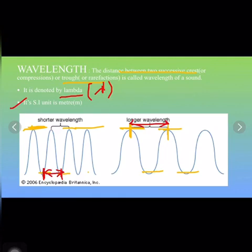To summarize: compression is the crowded region where particles are close together, and rarefaction is the spread-out region where particles are far from each other. The upper portion where particles are crowded is called the crest, and the lower portion where particles are spread out is called the trough. Wavelength is denoted by lambda, the upside-down Y symbol, and its SI unit is meter.